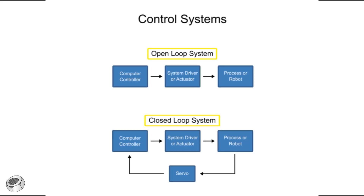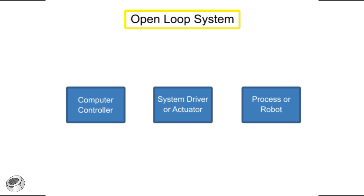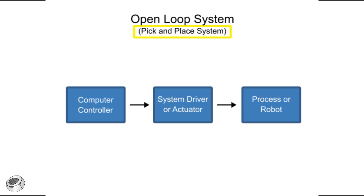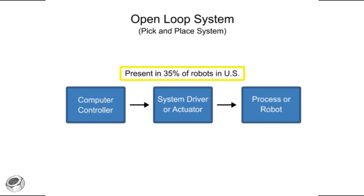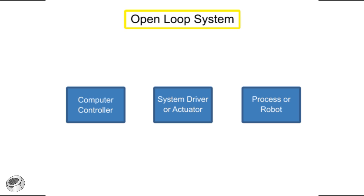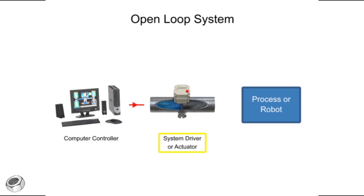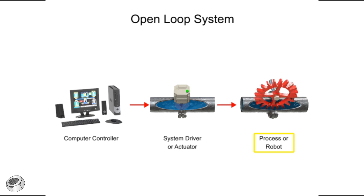There are different types of control systems used in robotics. In open-loop control, the computer sends signals based on the current state without taking into account feedback from the system. This type of system is also called non-servo or pick-and-place, and is used in about 35 percent of the robots in the United States. In open-loop control systems, signals are first sent by a computer controller to the system driver, which then converts those signals into an operation for the process or robot to perform.